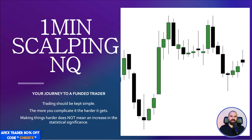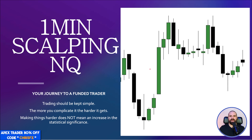Trading should be boring anyway. Making it even more boring is a recipe for disaster. Making things harder does not mean an increase in the statistical significance of a winning strategy — it doesn't mean you will be increasing the win rate. You might even decrease it. Adding 2,000 confluences won't make the strategy better. Not only that, you will have less opportunities to trade, which means less earnings at the end of the day, week, and month.